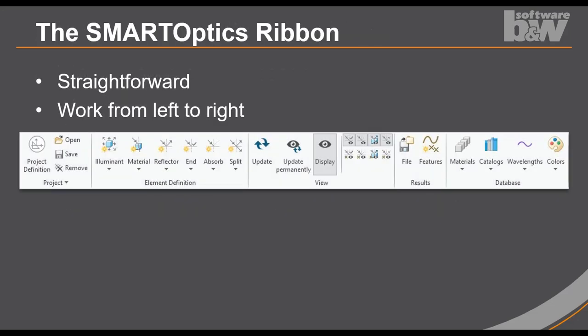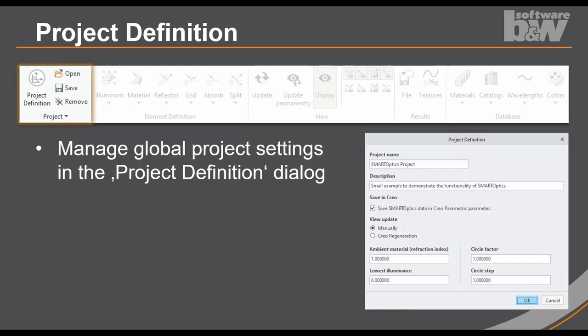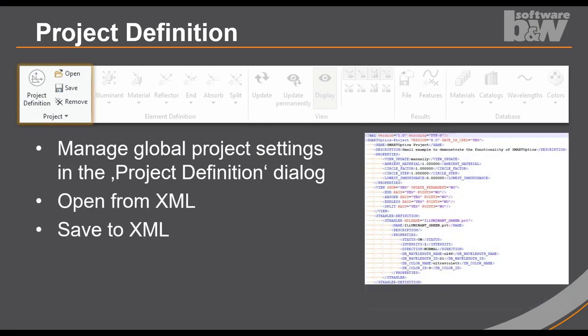Let's have a closer look to the smart optics ribbon. Well, smart optics comes in Creo with an extra tab. That ribbon is straightforward. You work from left to right and the ribbon leads you through the whole process. So let's take a brief look at the groups itself. So we start on the left side with the project group. In the project group, you have access to the project definition dialogue and you can manage all the settings there. You can also open or save some XML data. You can store the complete smart optics information in a file. And of course, you can clean up the complete process after finishing.